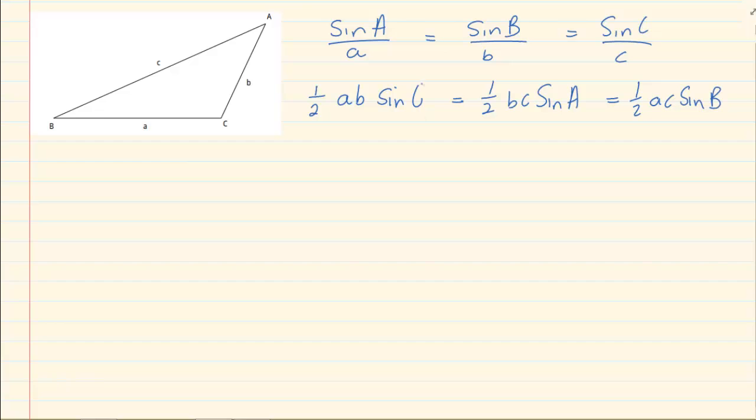So what we have done is we know that half AB sin C is the area of a triangle, and likewise half BC sin A is equal to the area of a triangle, which is equal to half AC sin B. We have proven that in that specific proof.